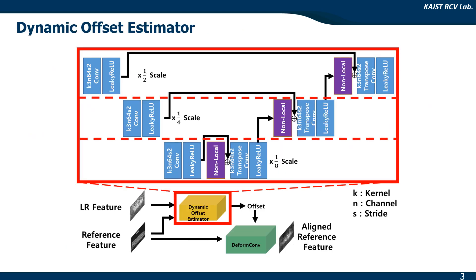Inside the module is the dynamic offset estimator, which searches for similarity by learning the offsets of the deformable convolution. A multi-scale structure and non-local blocks are adapted to estimate the dynamic offset, softly conducting pixel or patch level similarity matching.